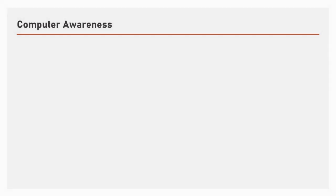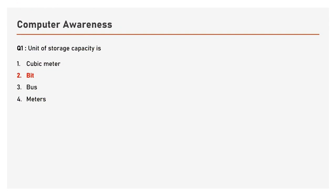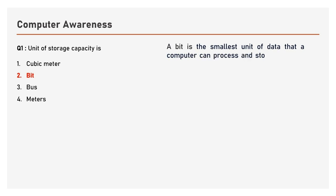Question number 1: The unit of storage capacity is — options are Cubic meter, Bit, Bus, Metres. The answer is Bit. A bit is the smallest unit of data that a computer can process and store.